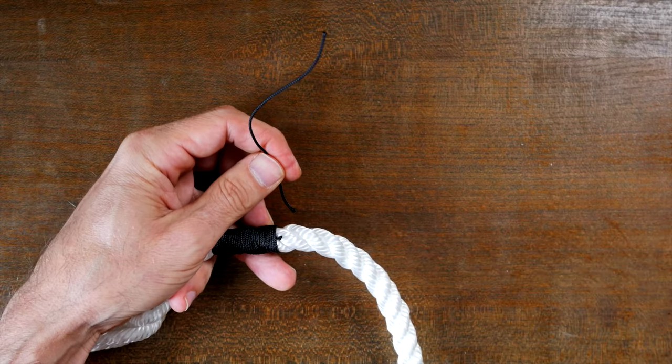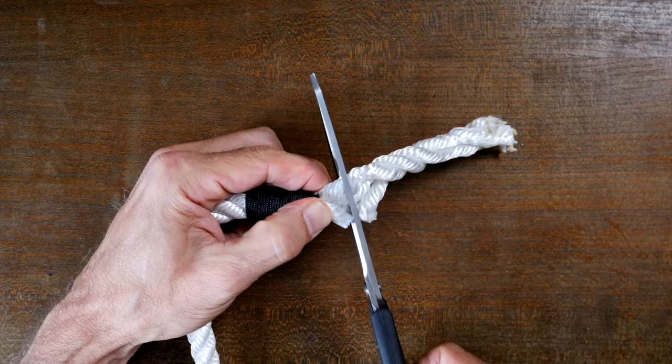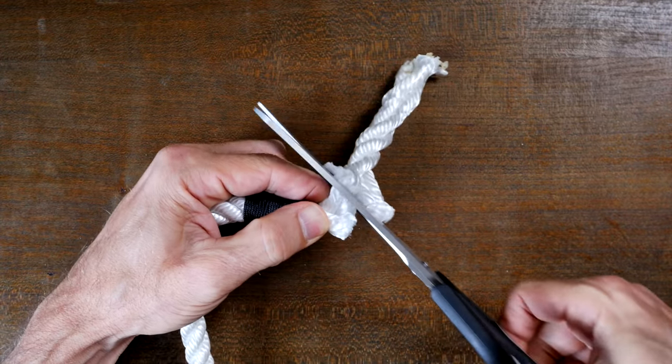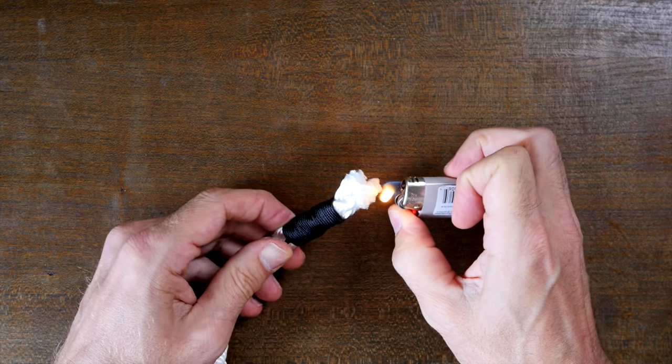From there, you can trim away any extra cord, any messy rope that might be at the end of your main line. And if you're using a synthetic rope, you can melt the end a little bit to tidy it up a bit more.